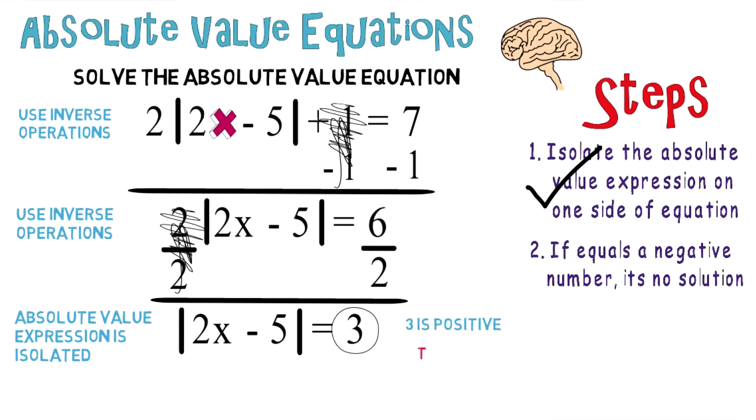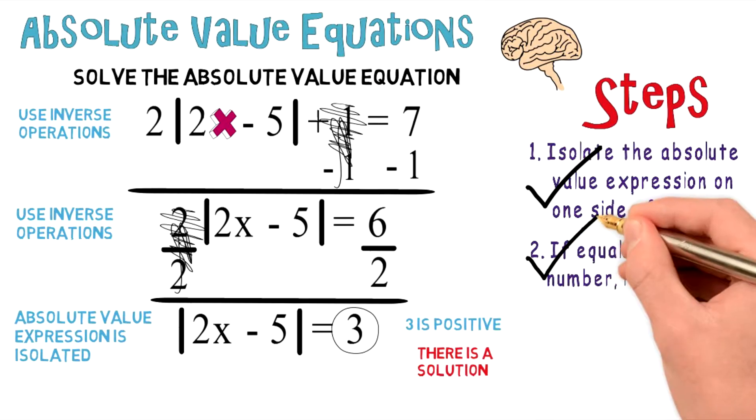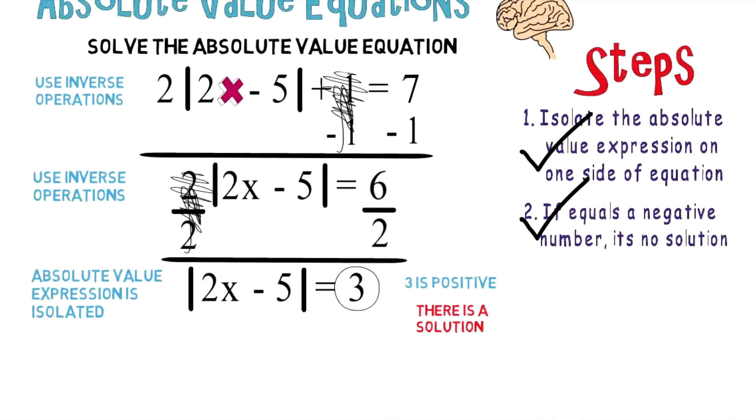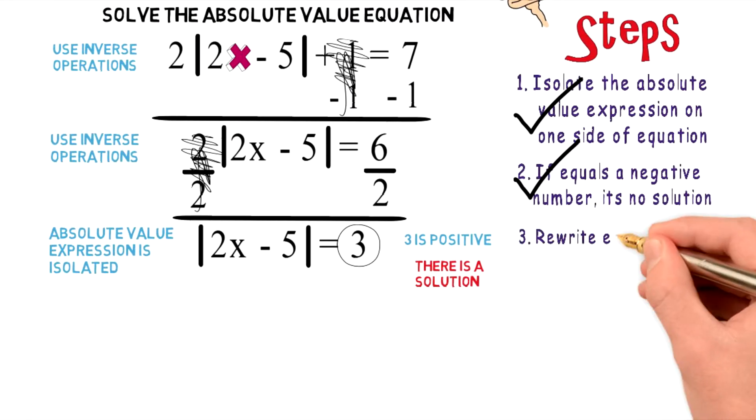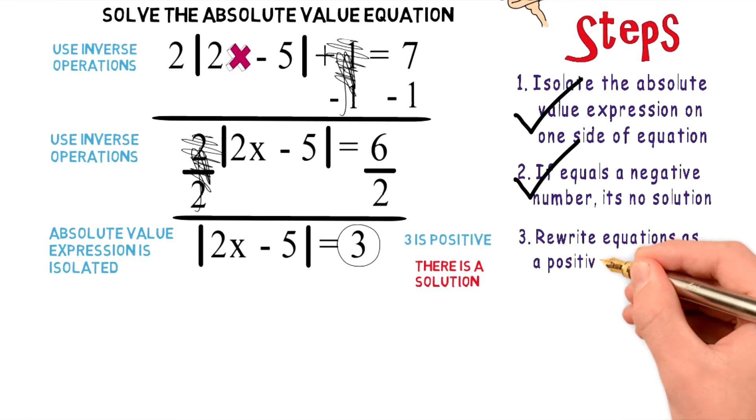So there is a solution. So now we're going to check off step number two and go on to step number three, which is rewrite equations as one positive and one negative solution.